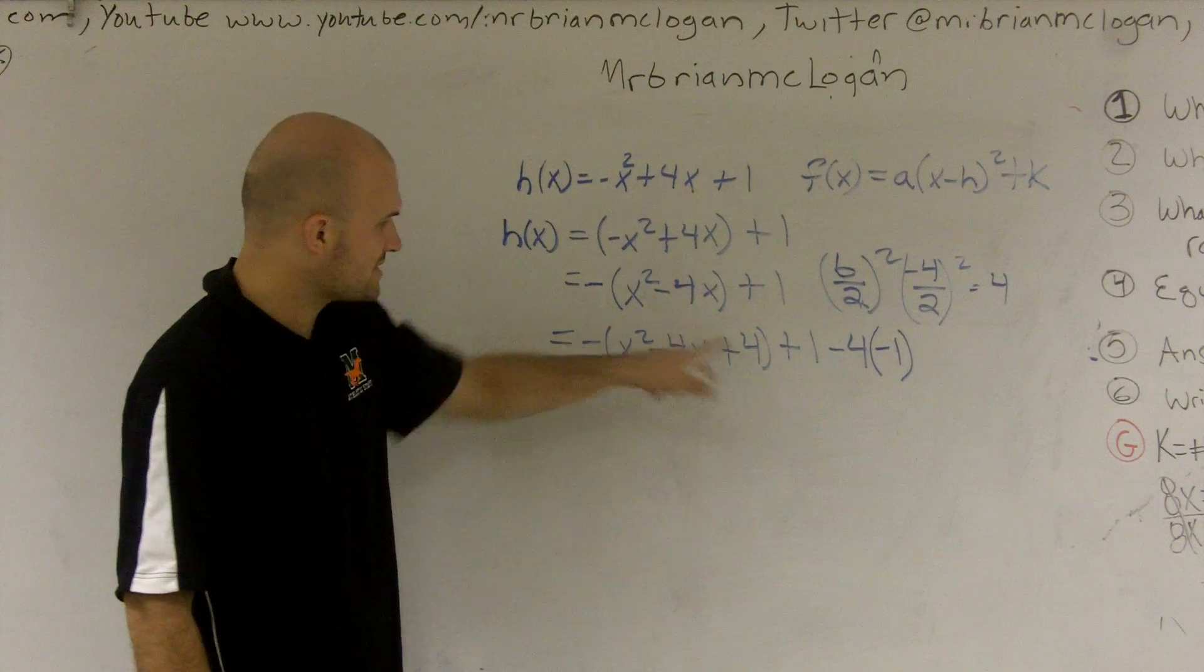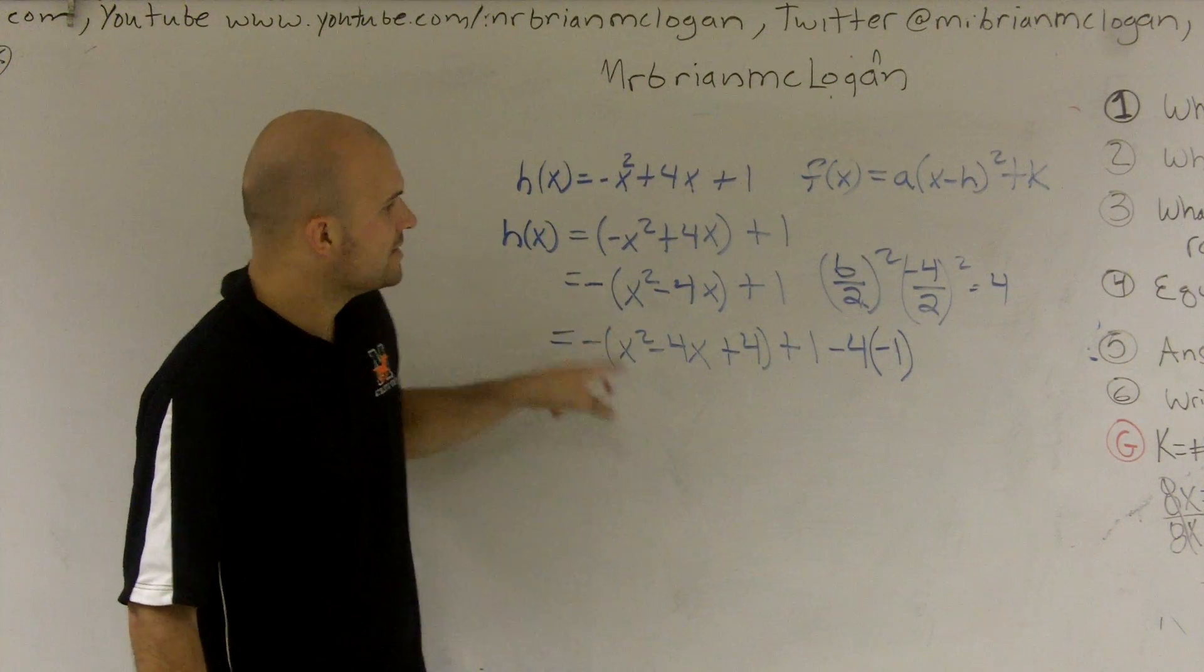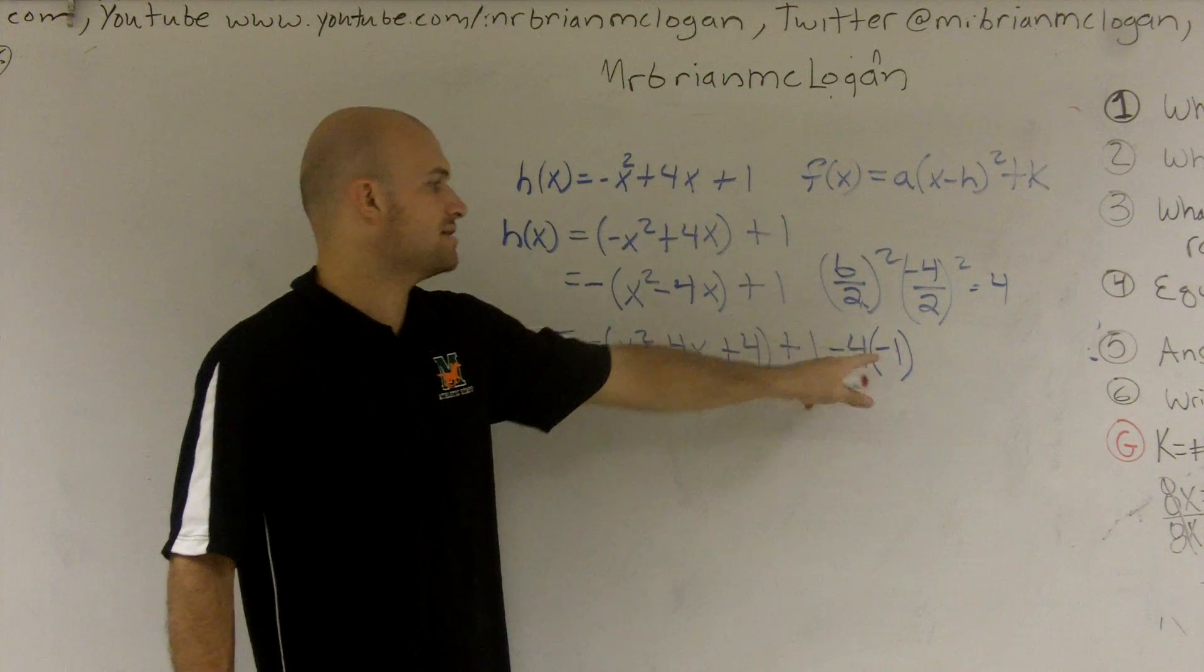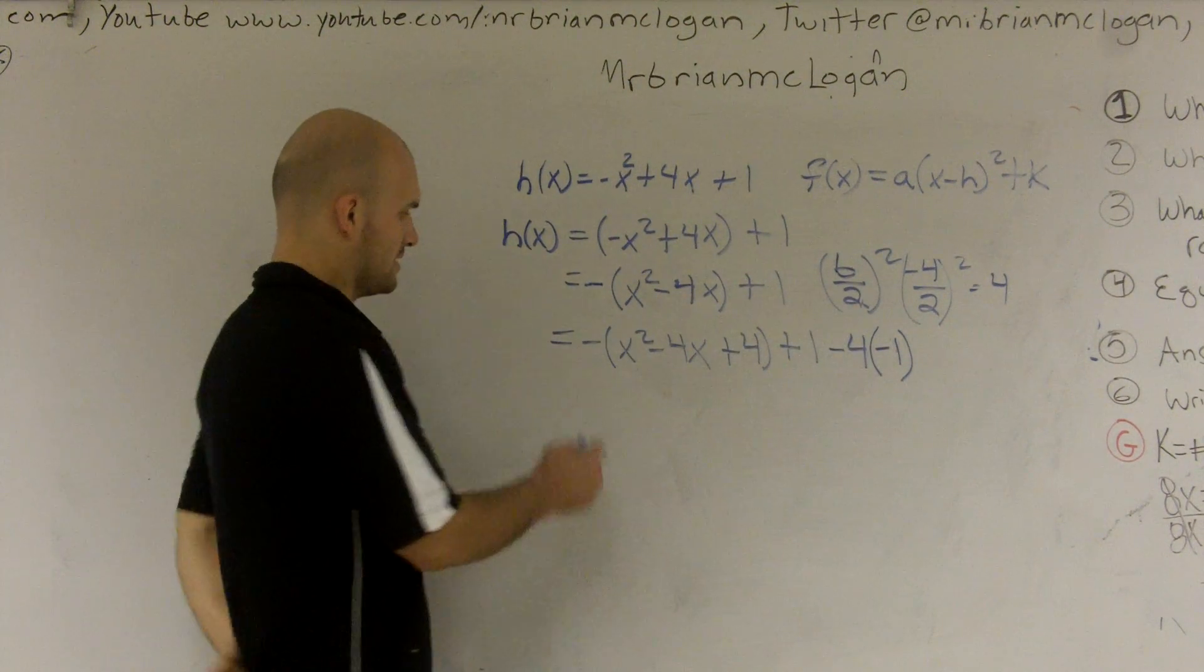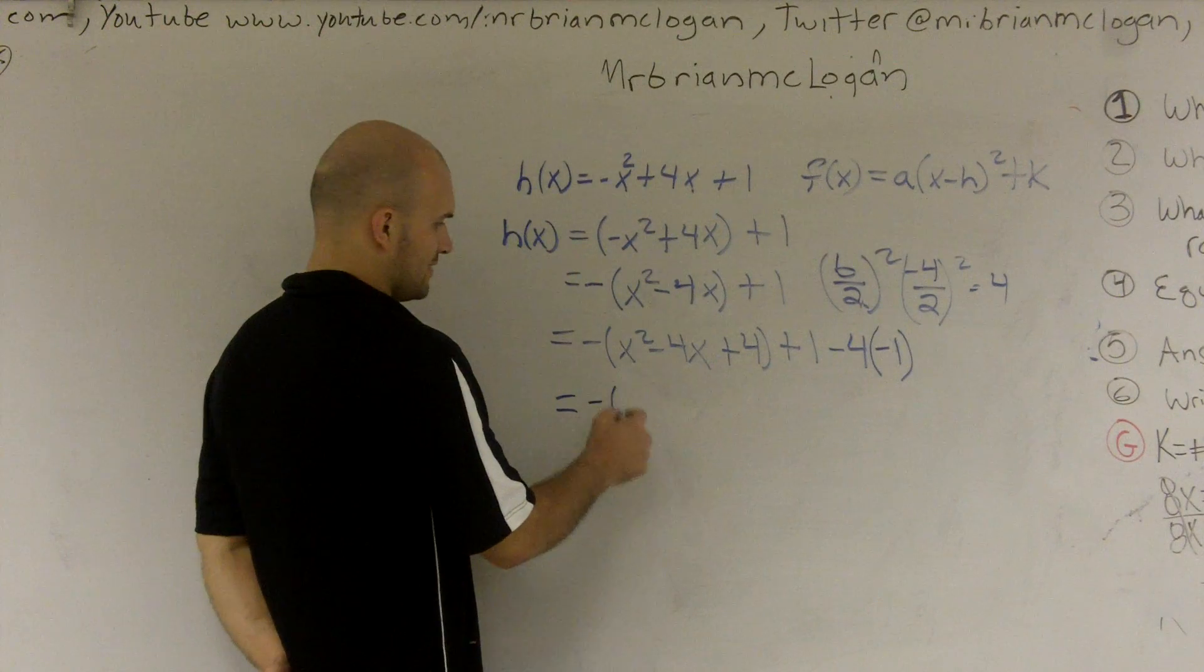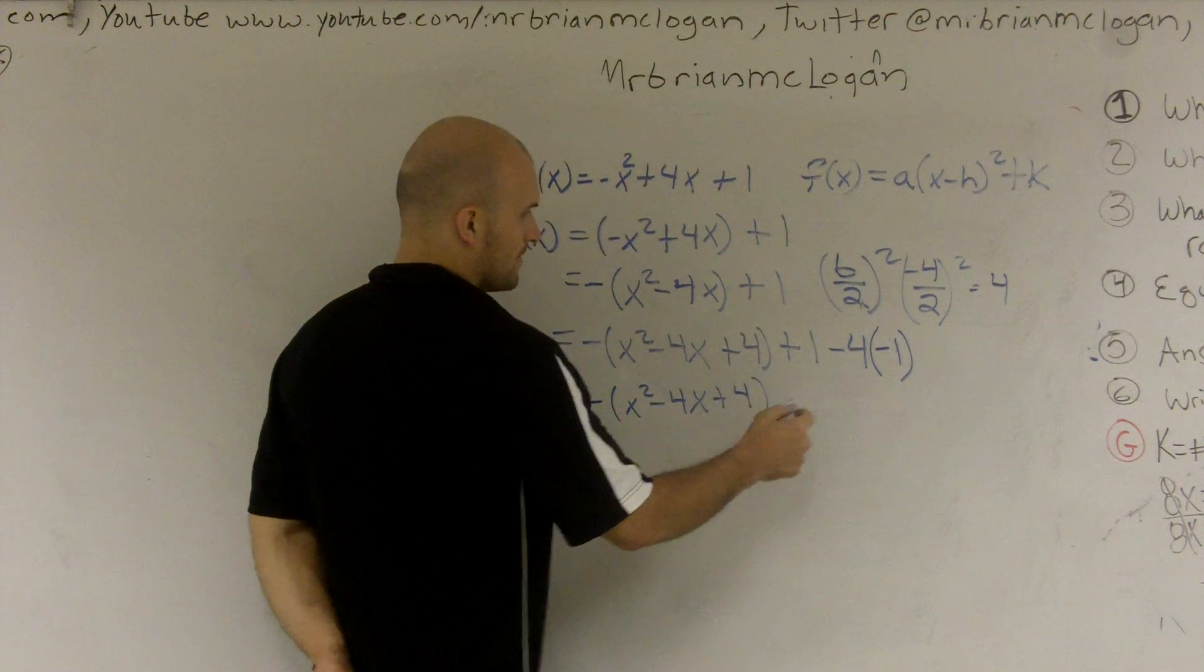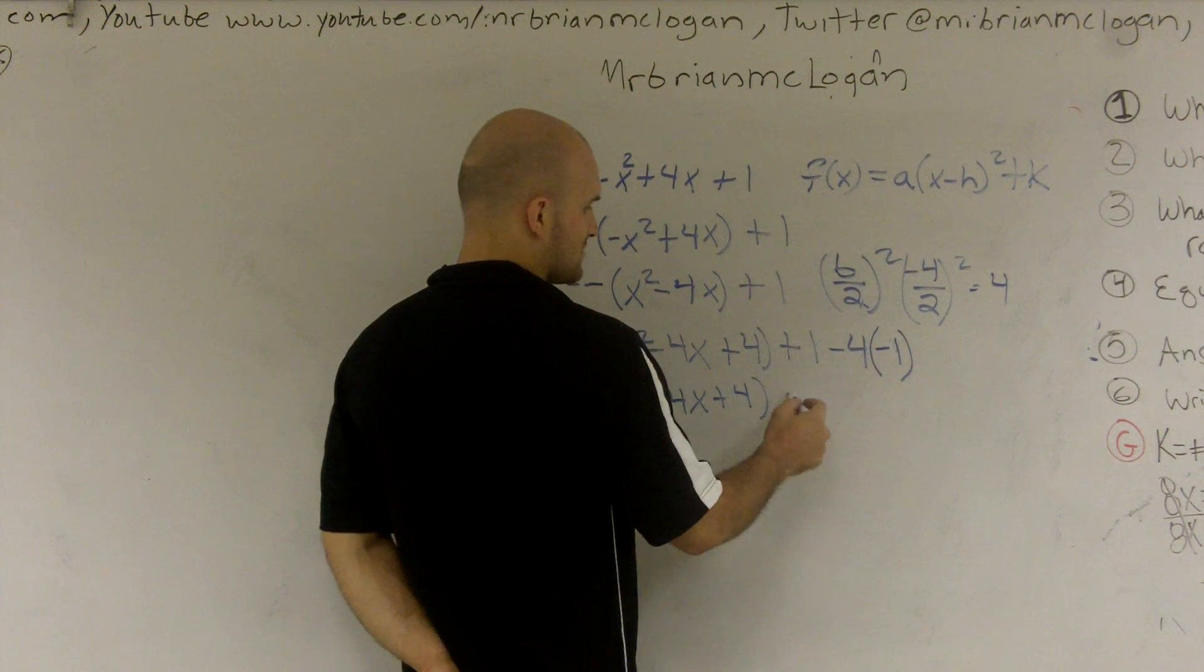Because since I added it inside the parentheses, it's being multiplied by a negative 1. So therefore, if I'm going to subtract the 4, this is add, this is subtract, you also need to multiply this by a negative 1. So therefore, what I get now is negative x squared minus 4x plus 4. This becomes a positive, so it's plus 5.